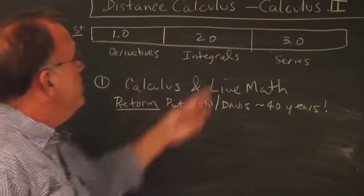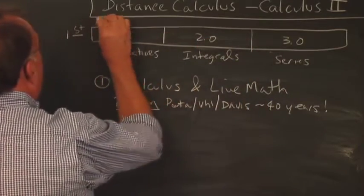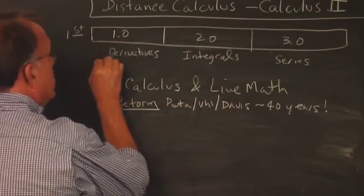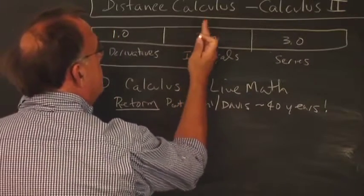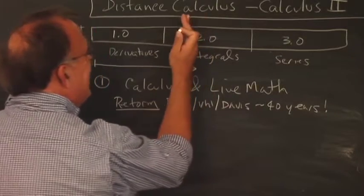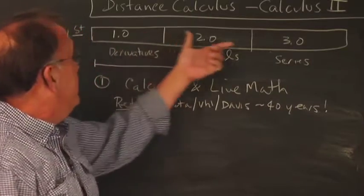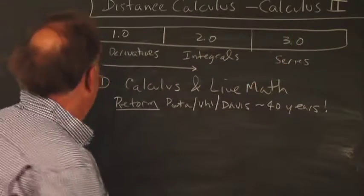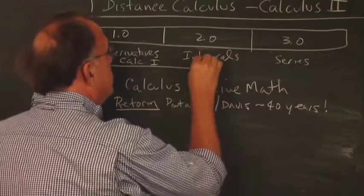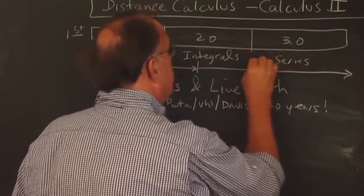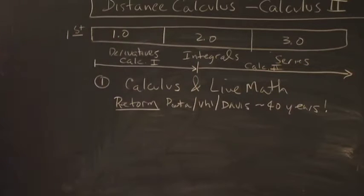And where does Calculus 1 fit into all of this? Well, it turns out that Calculus 1 actually goes to about here, not quite in the middle of 2.0. It stops just before maybe like a third of this spectrum here. And so this is Calc 1, and then Calc 2 is from here all the way across.